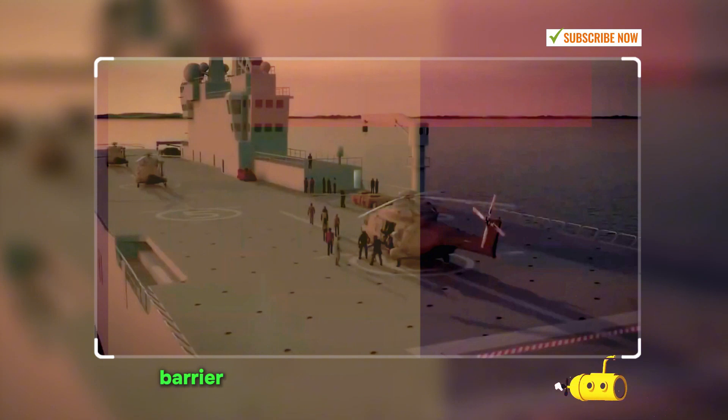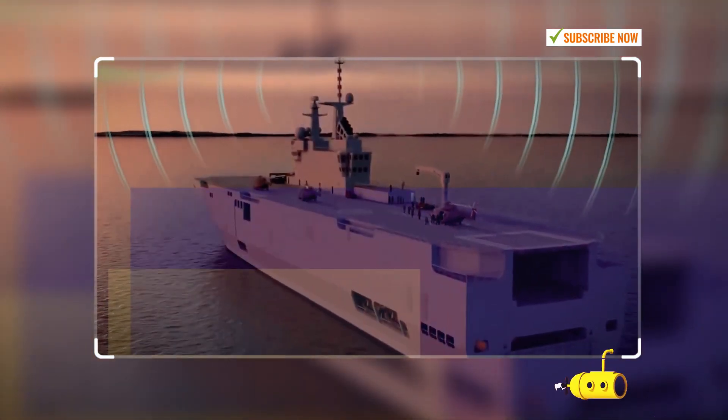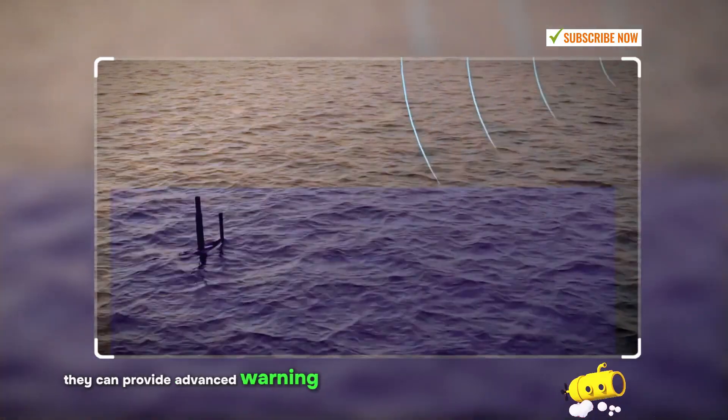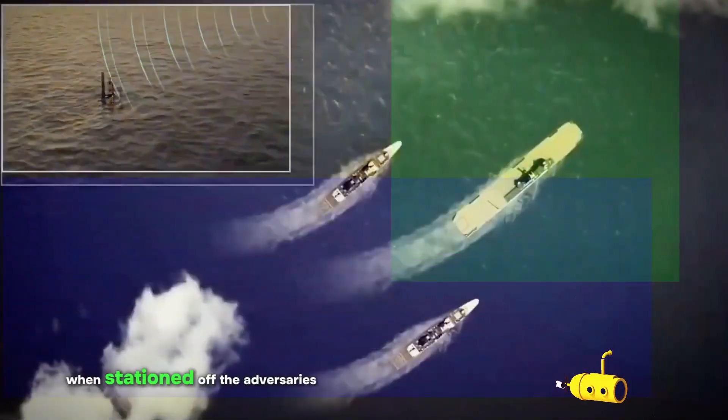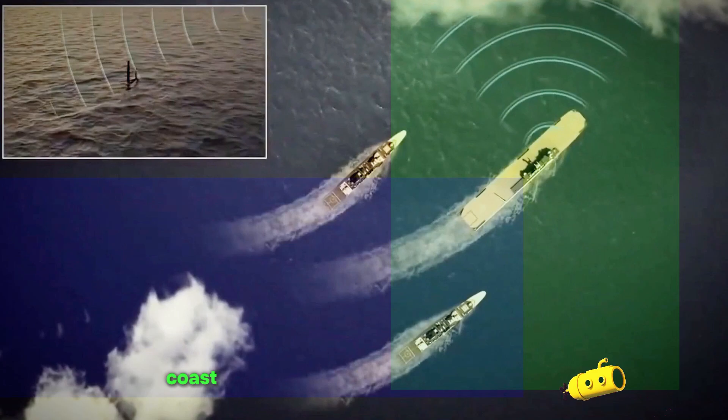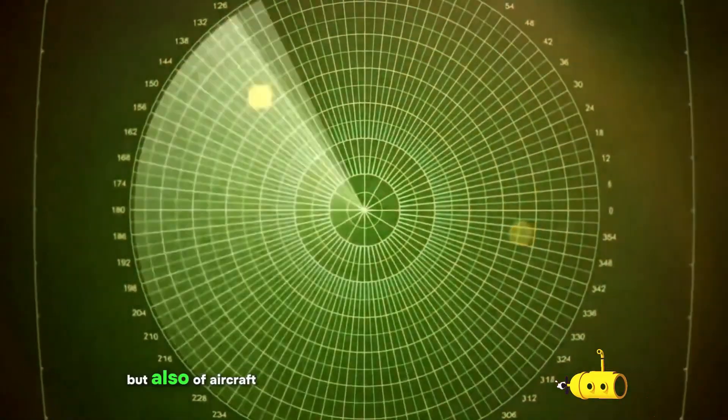They can act as a barrier past which the enemy must go to attack its key targets. They can provide advance warning of enemy movements when stationed off the adversary's coast, not only of enemy ships but also of aircraft.